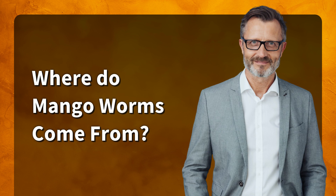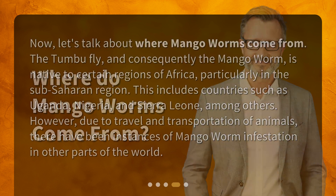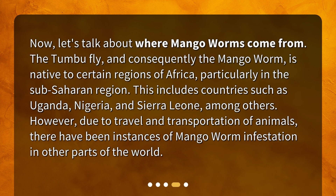Where do mango worms come from? The tumbu fly, and consequently the mango worm, is native to certain regions of Africa, particularly in the sub-Saharan region. This includes countries such as Uganda, Nigeria, and Sierra Leone, among others. However, due to travel and transportation of animals, there have been instances of mango worm infestation in other parts of the world.